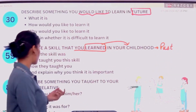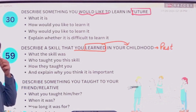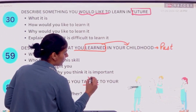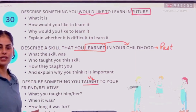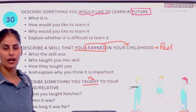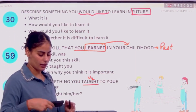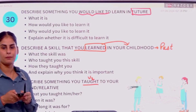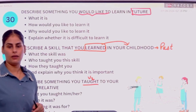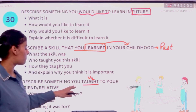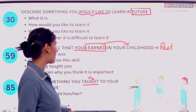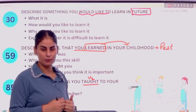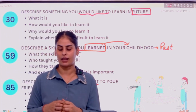Next cue card: describe something that you taught to your friend. Here we are using the second form of the verb. If you have taught, that means you have learned something. This is again in the past tense — simple past tense — so we have some skill that you have learned.